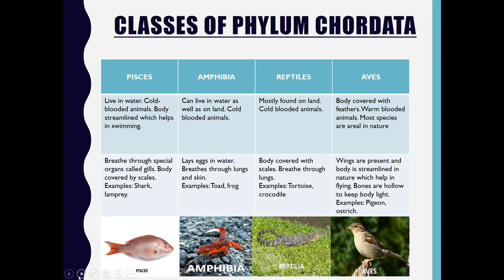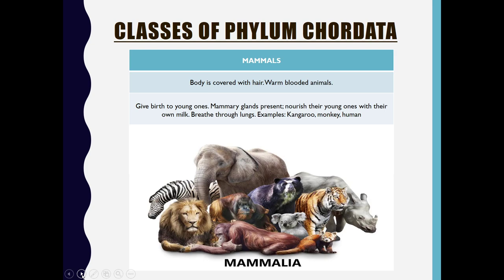Coming to Class Mammalia: the body is covered with hair, and they are warm-blooded animals. They give birth to young ones. They have mammary glands present and nourish the young ones with their own milk. They breathe through lungs. Examples of this class include kangaroo, monkey, and human.